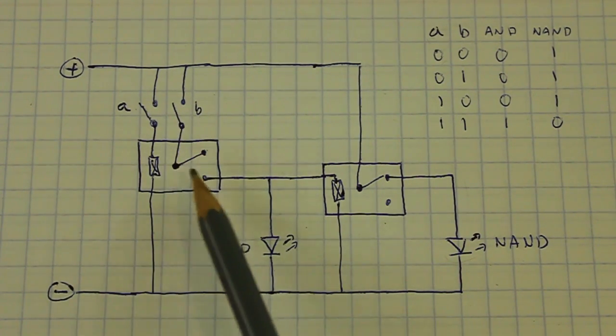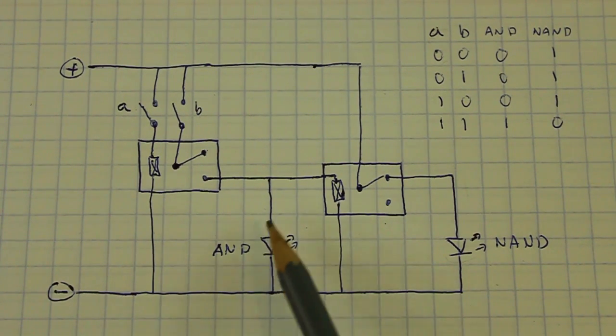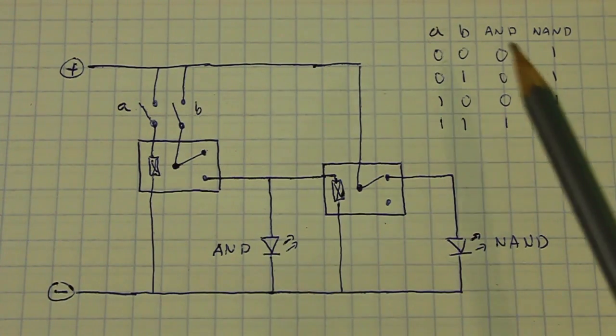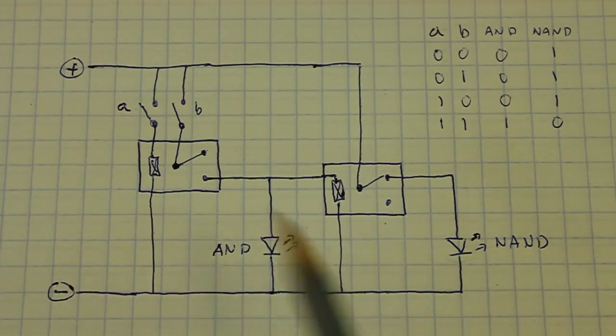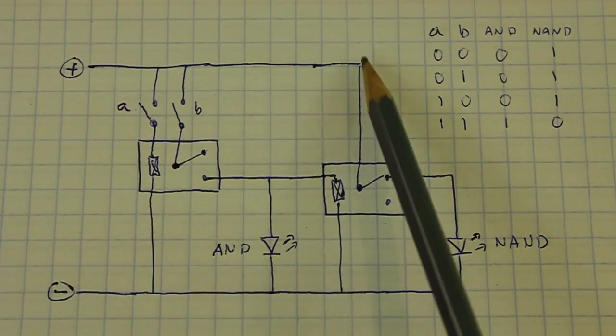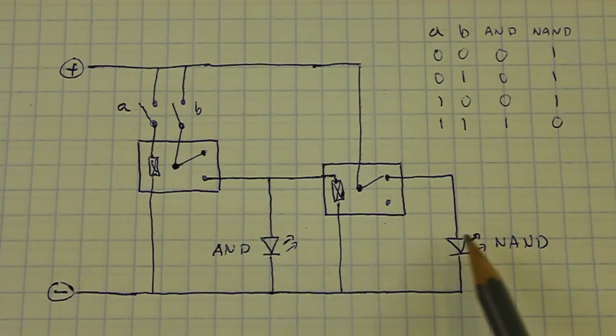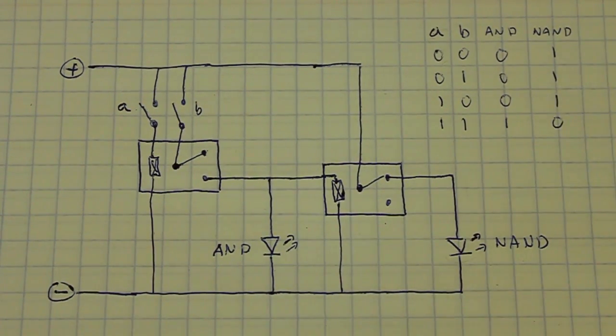We have that the current cannot go to the AND LED and it is OFF. That is 0. But the NAND LED does have current and therefore it is ON. We have a 1.